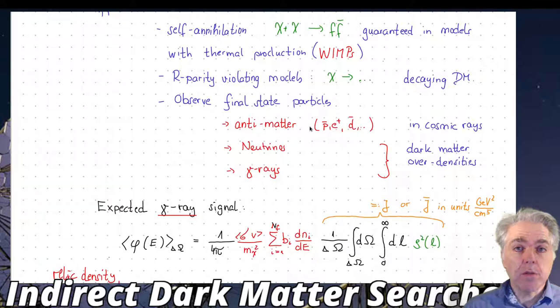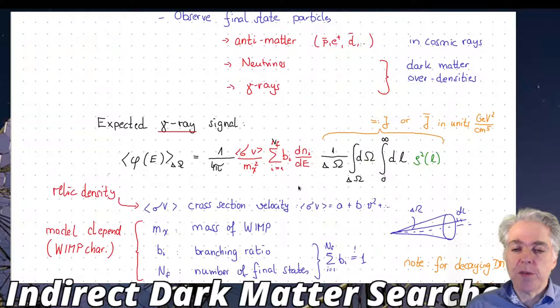the neutrinos and the gamma rays point back to where they're produced. We would be looking at objects which are dark matter dominated like dwarf galaxies or the center of our own galaxy, looking at parts of the sky where dark matter density is sufficiently high to produce a lot of gamma rays as well as neutrinos.